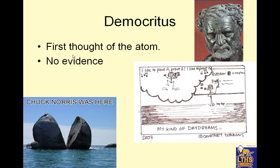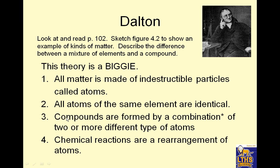Way back in the day in ancient Greece, there was a man named Democritus. He's actually given credit for first thinking of atoms as being these tiny particles that matter is made out of. But he didn't really have any scientific evidence to support it — it might look like something happened, but do we have scientific evidence to support that? Democritus thought about it, but he was not able to prove anything.